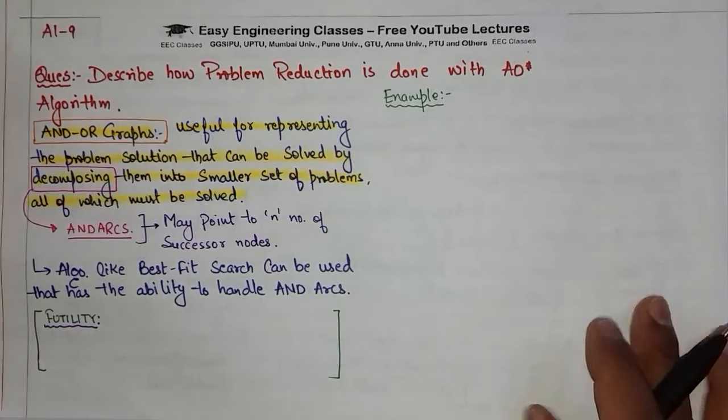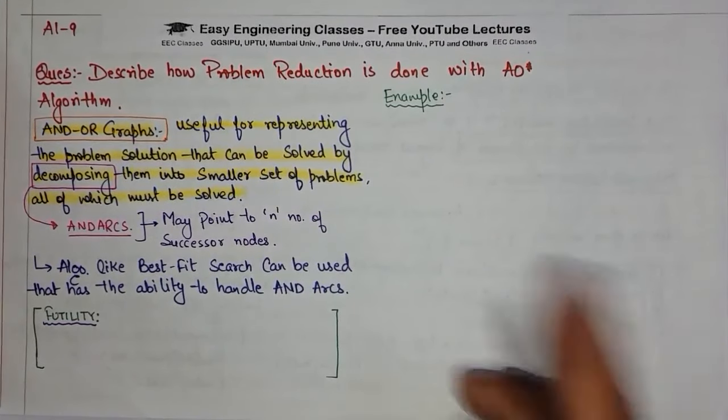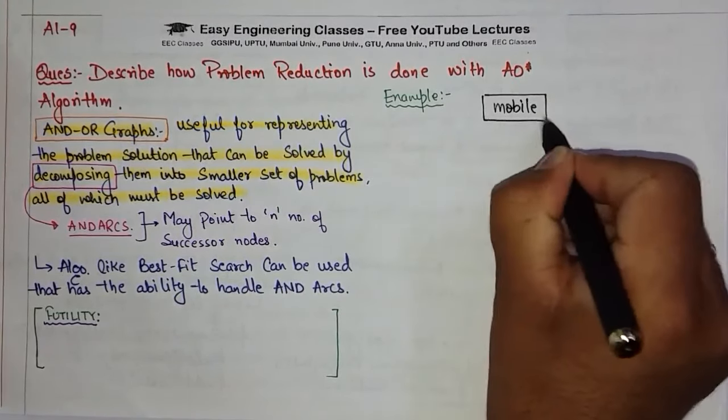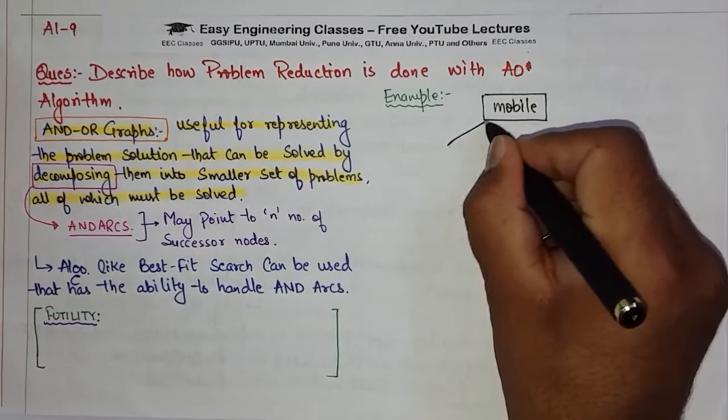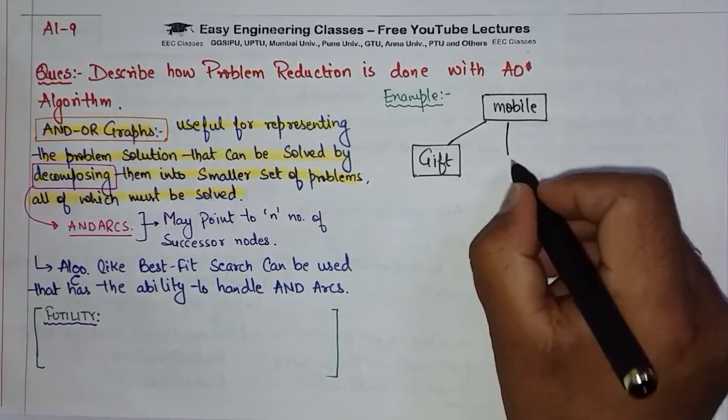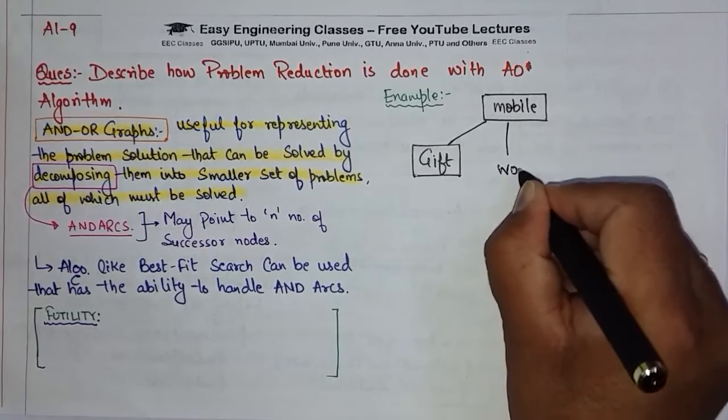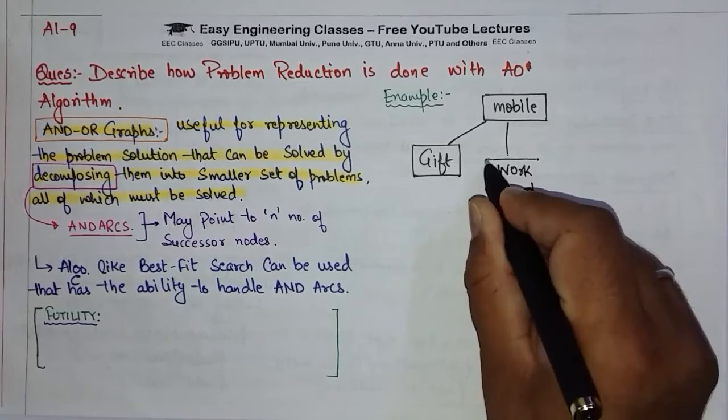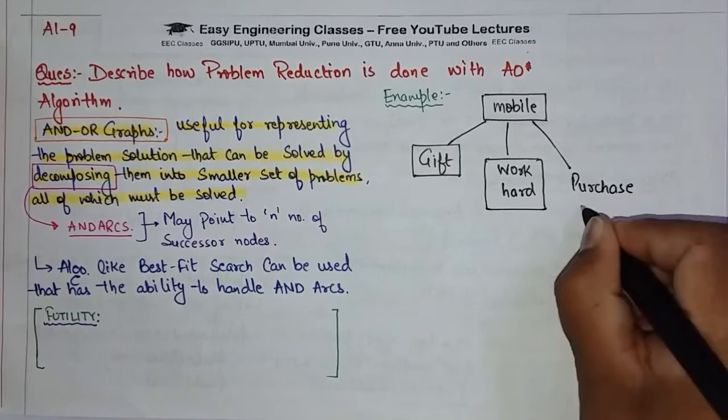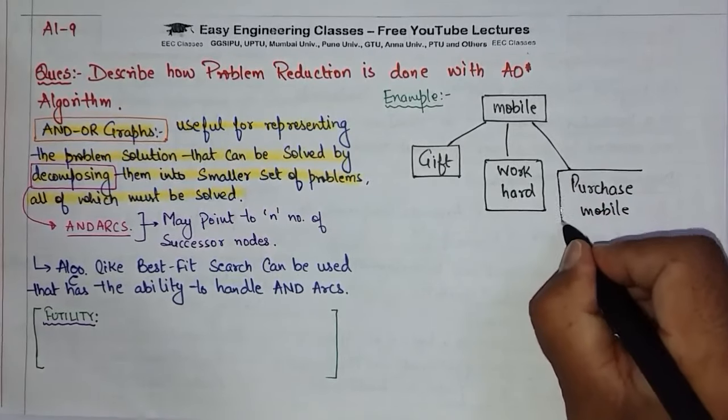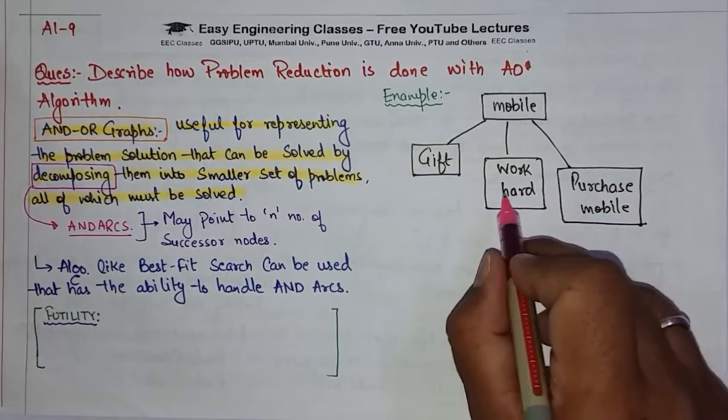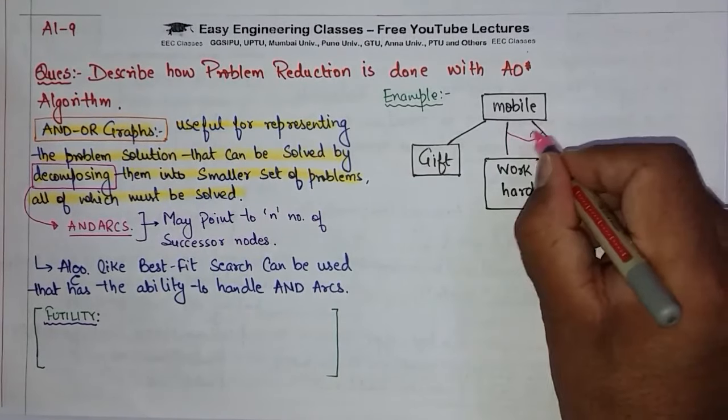Let's take a simple example. Suppose the goal is to have a mobile. You can choose mobile, then you work hard, and then you purchase mobile. Now let's see if you have the AND arc. This purchase mobile is related to work hard, we will call it AND arc.